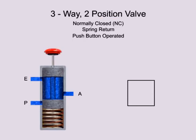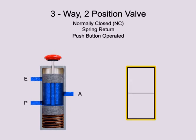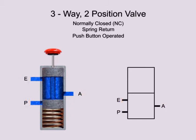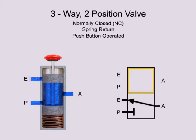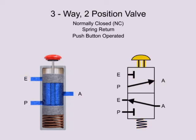The most important applications in fluid power for three-way valves are for directional control. Here we have a typical three-way valve with two operating positions. This valve has an inlet port P, exhaust port E, and output port A. In its normal position, inlet port P is blocked and outlet port A is connected to exhaust port E. The second position allows fluid to flow from the pressure port P to outlet port A and blocks exhaust port E. The valve is also spring return and push button operated.